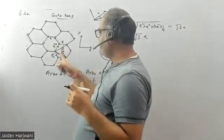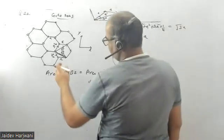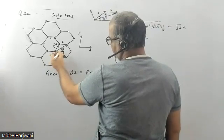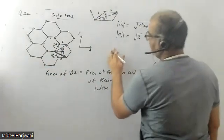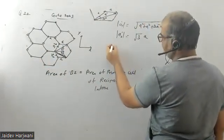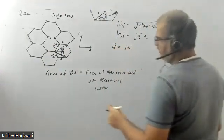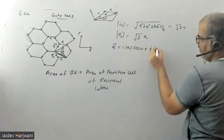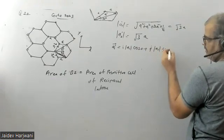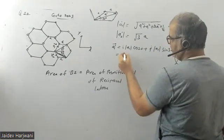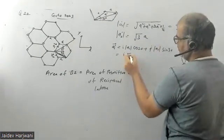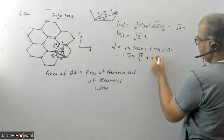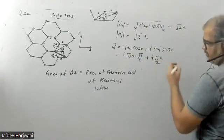Now I will write a1' and a2' in component form. The angle here is 120°, and if I divide this, it will be 30°, 30°, 30°. So I can write the vector a1' as: magnitude of a1' in the x-direction gives i·cos30° plus j·magnitude of a1'·sin30°. Since a1' = √3a, this becomes √3a·cos30° in the i-direction, where cos30° = √3/2, and √3a·sin30° in the j-direction, where sin30° = 1/2.